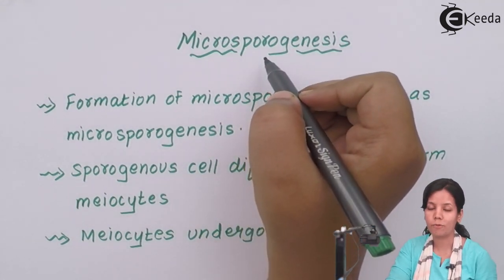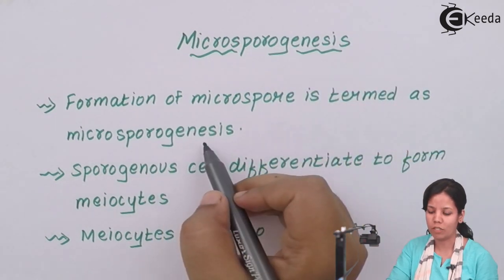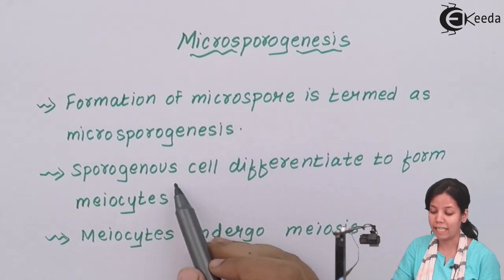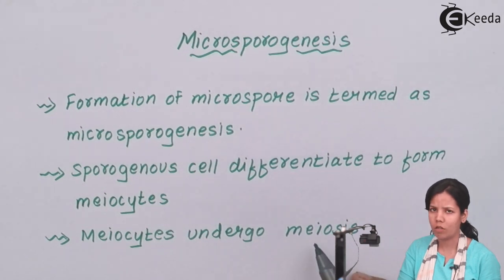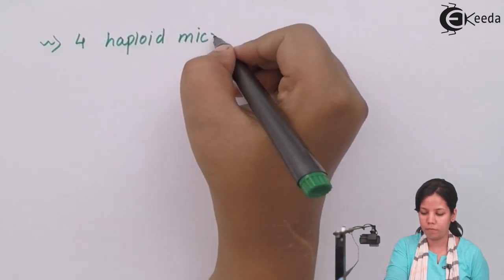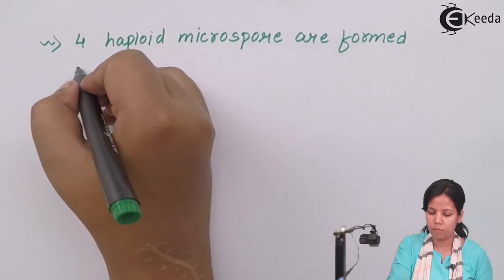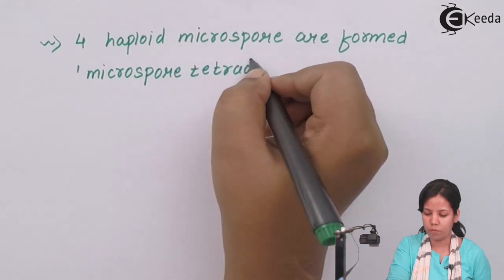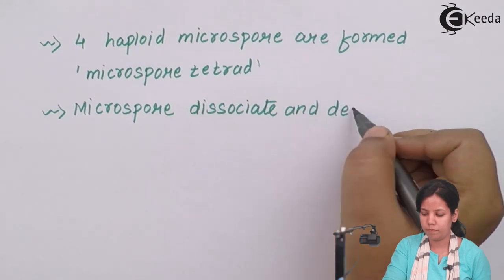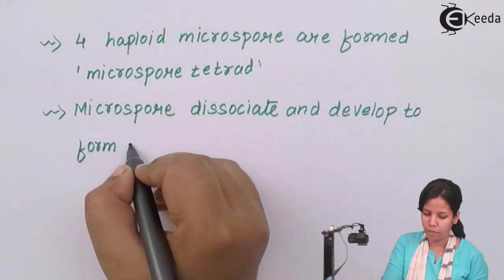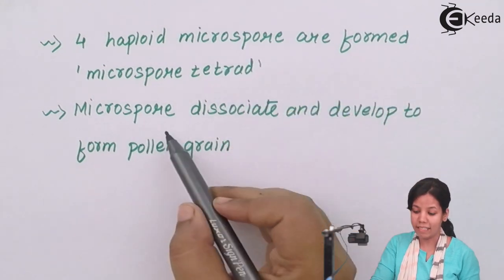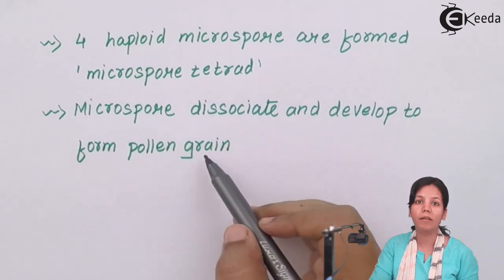To summarize microsporogenesis: the formation of microspores is termed microsporogenesis. 'Micro' means small and 'spores' means pollen grains. Sporogeneous cells of the microsporangia differentiate to form meocytes, and these meocytes undergo meiosis (reduction division) to form four haploid microspores — the microspore tetrad — which then dissociate and develop to form the pollen grain, or male gametophyte.